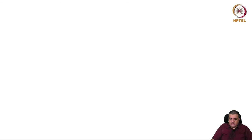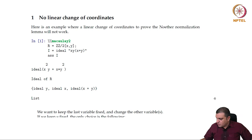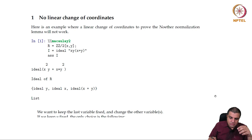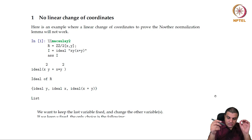This is the proof of the general version of Noether normalization lemma. Let's do an example, and then I will come back to the question of finiteness and how to use it. In the first proof of Noether normalization lemma for infinite fields, we observed that a linear change of coordinates would work. Here is an example where a linear change of coordinates won't work.